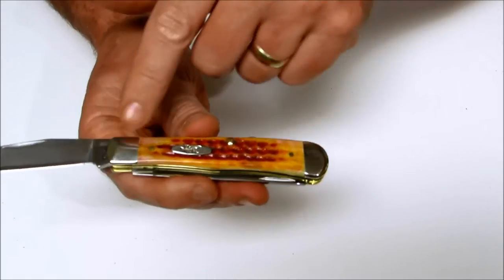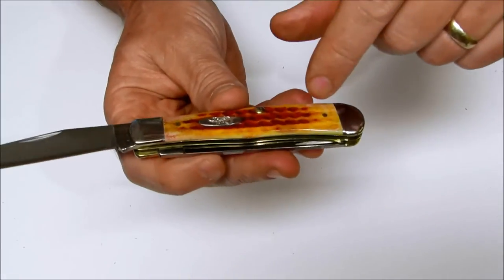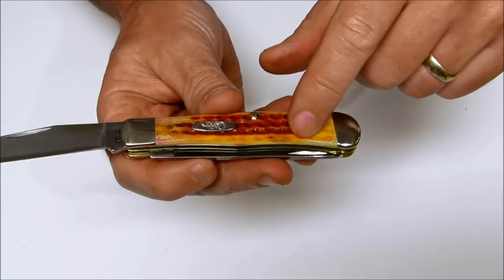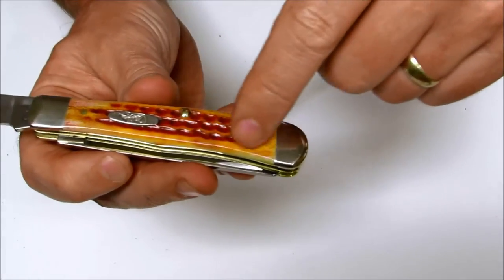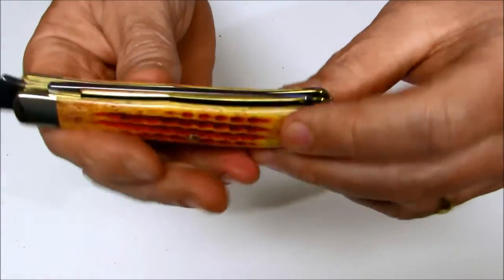It has nickel silver bolsters and the harvest orange jig bone handles. This is the corn cob style jig bone which looks like a corn cob after you've eaten the corn off of it.